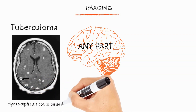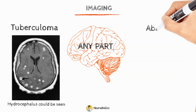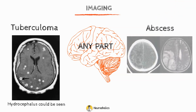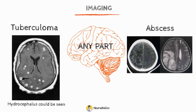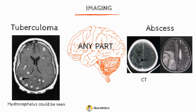Hydrocephalus affects 37% of patients and is caused by the tuberculoma blocking CSF flow. Abscesses lead to a more dramatic accumulation of fluid and subsequent edema of the surrounding tissue. Abscess appears hypodense on CT scans and hyperintense on T2-weighted MRI scans.